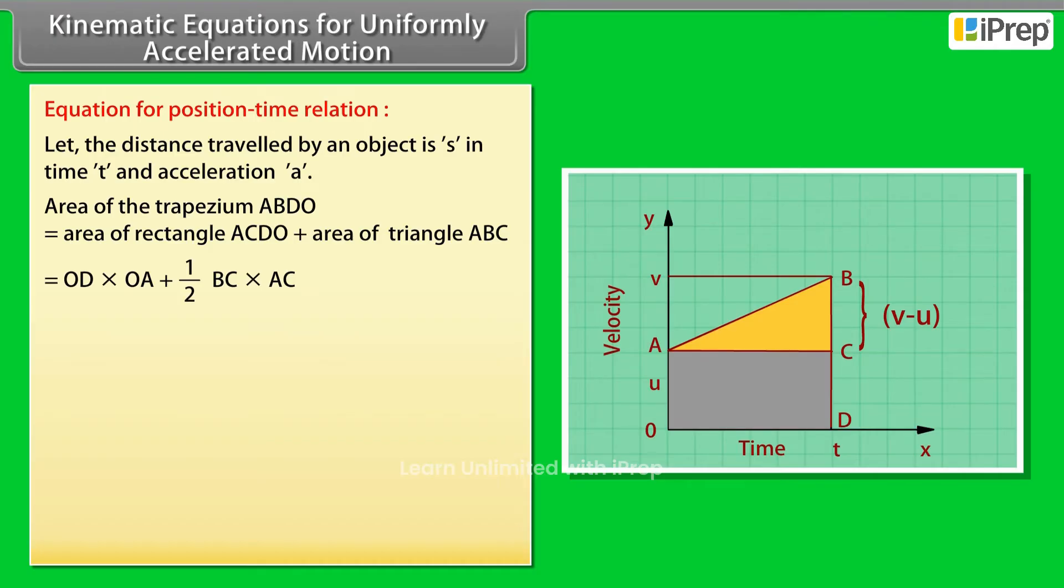Now, by putting the values and calculating it, we get UT plus one-half times V minus U times T. Now, from the first equation, we know that V minus U equals AT.